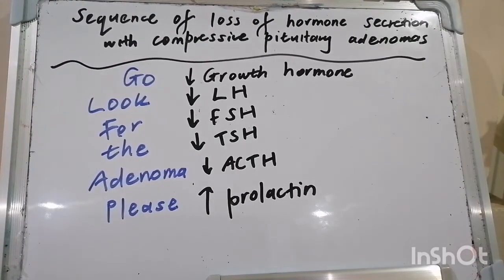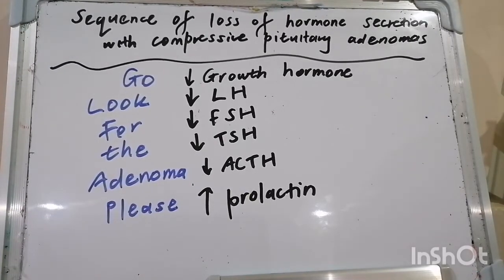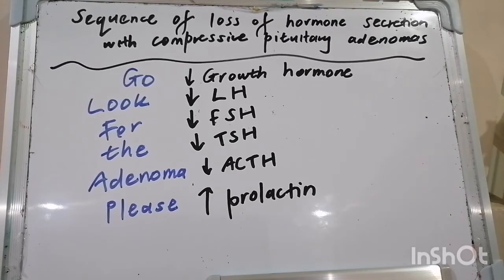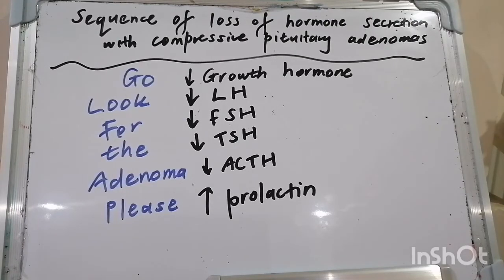To investigate a suspected pituitary adenoma, labs include: prolactin level, IGF-1 (simpler than growth hormone to interpret, since GH is released in a pulsatile fashion), and a pituitary panel — LH, FSH, TSH, ACTH, morning cortisol, free T4, and possibly morning testosterone, estrogen, and progesterone. Image the pituitary with MRI. Special tests: for acromegaly, a 75g oral glucose tolerance test; for Cushing syndrome, a low-dose dexamethasone suppression test.